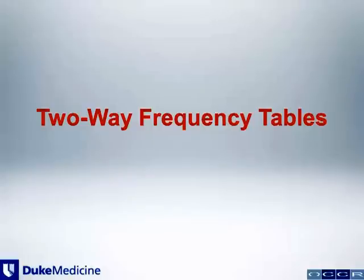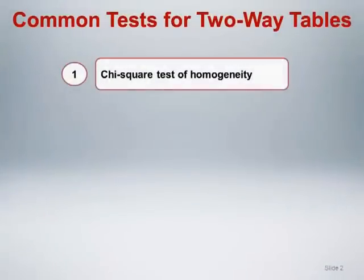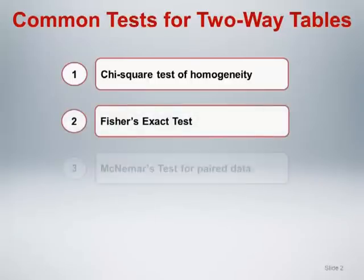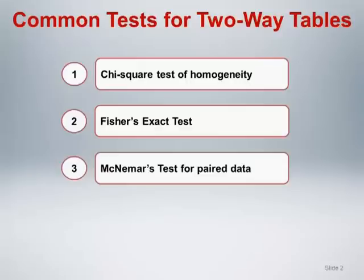In this presentation, we will discuss common statistical tests used for analyzing two-way frequency tables. Three of the most commonly encountered tests are the chi-square test of homogeneity, Fisher's exact test, and McNemar's test for paired data. Although most examples focus on the simplest two-way frequency table with two rows and two columns, commonly known as two-by-two tables, two-way frequency tables can contain more than two rows and two columns, commonly referred to as R-by-C tables.